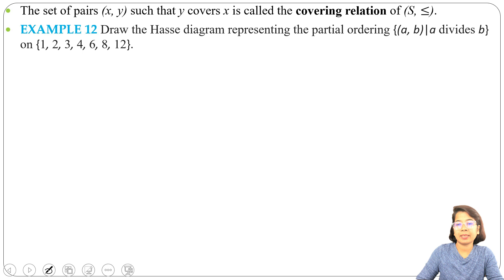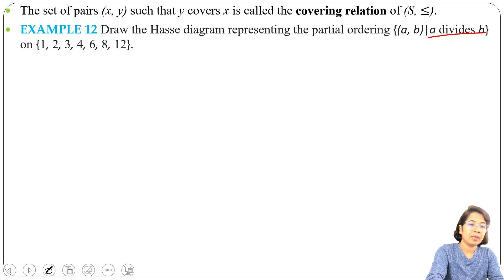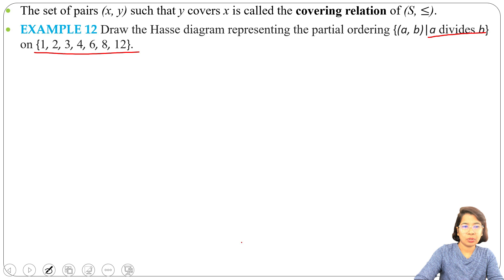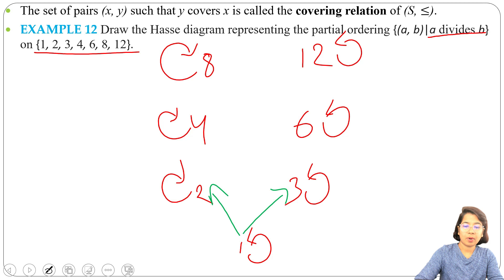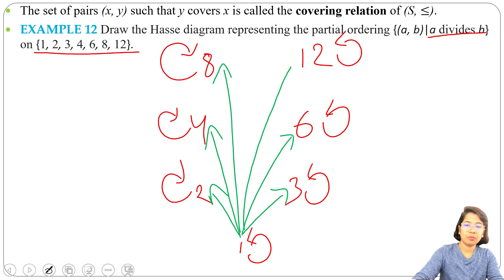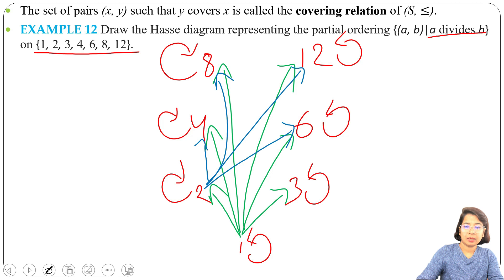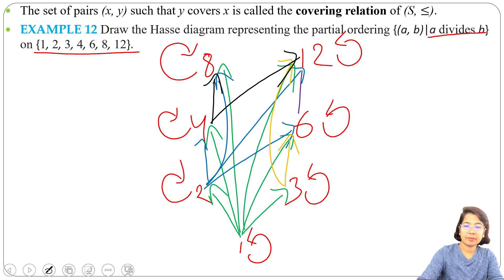Example 2: Draw the Hasse diagram representing the partial order (A, B) such that A divides B on {1, 2, 3, 4, 6, 8, 12}. First, write these elements as vertices: 1, 2, 3, 4, 6, 8, 12. Every number divides itself, so there is a self-loop at every vertex. Next, 1 divides every number, so there are edges from 1 to 2, 1 to 3, 1 to 4, 1 to 6, 1 to 8, and 1 to 12. Then 2 divides 4, 6, 8, 12; 3 divides 6 and 12; 4 divides 8 and 12; and 6 divides 12.